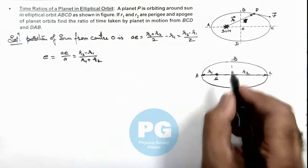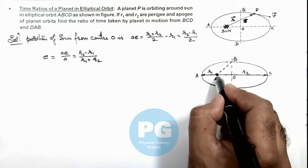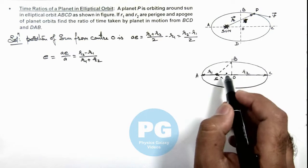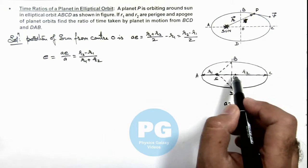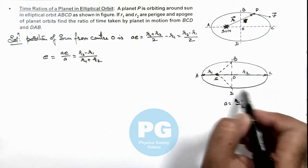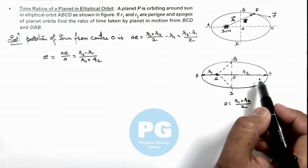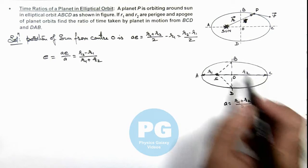So if we know the eccentricity, we can easily find out the area of this triangle. Because when we talk about the time taken by the planet in going from BCD, that will be depending on this area, as we know the areal velocity of a planet remains constant.